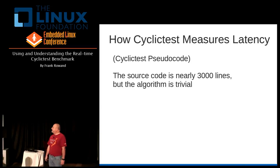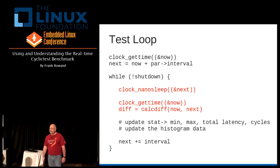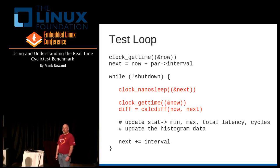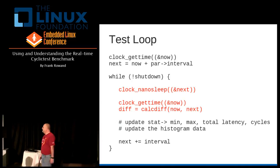Given that it's almost 3,000 lines of actual source code. Here we go — this is the key core of cyclic test. If you know this, you know 90% of what you need to know about cyclic test.